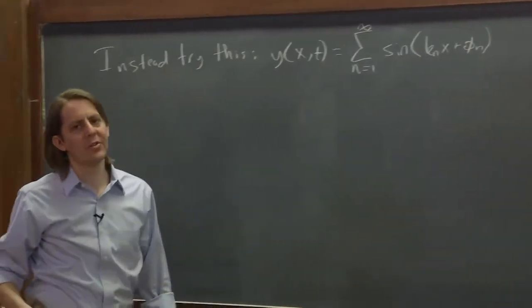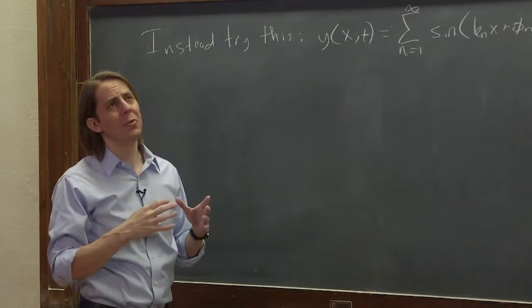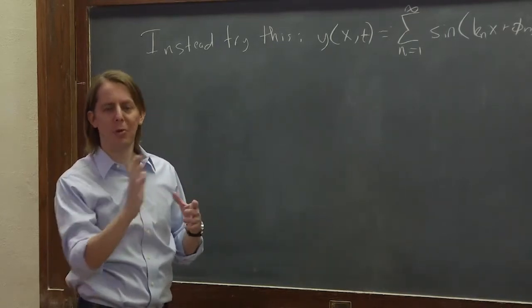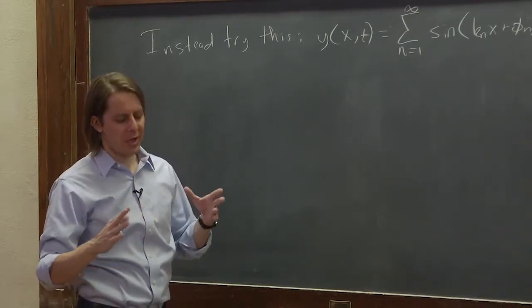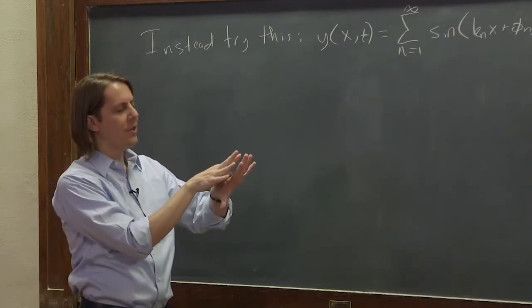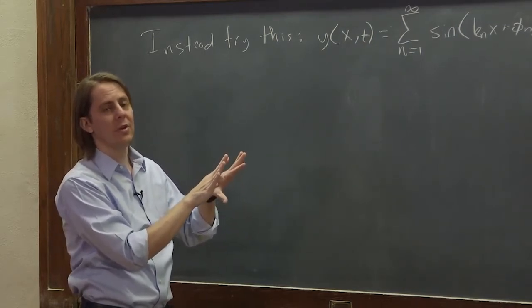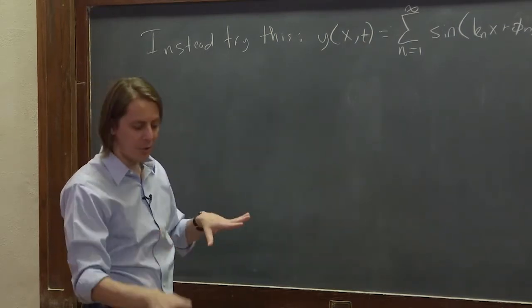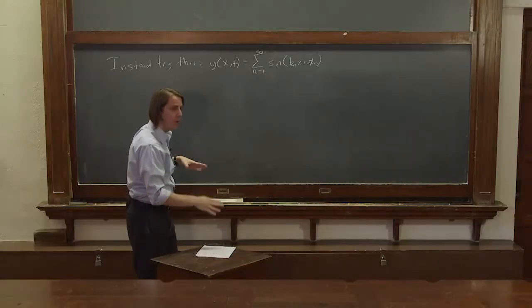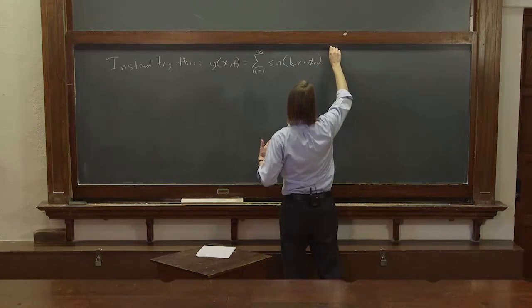And for the time part, instead of saying each normal mode can have its own arbitrary phase, we're going to do it as a sum of sine and cosine. Sine and cosine are always 90 degrees out of phase, and if you add them with different amplitudes, the result is a sinusoid of variable phase. So what I'm going to write here is just another way to write a sinusoid with variable amplitude and phase.